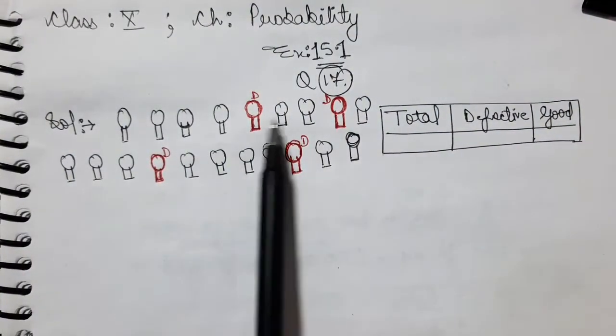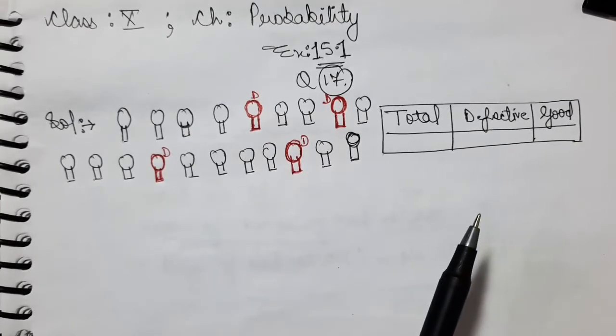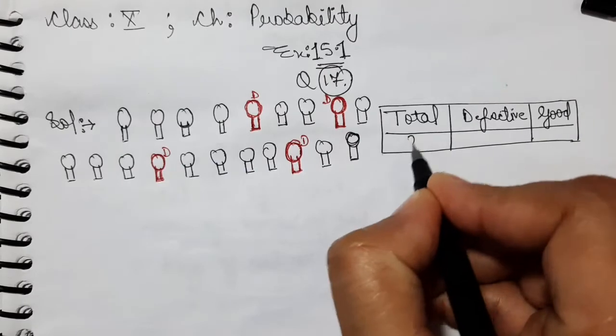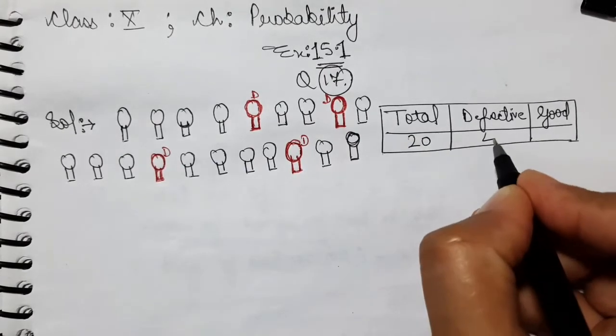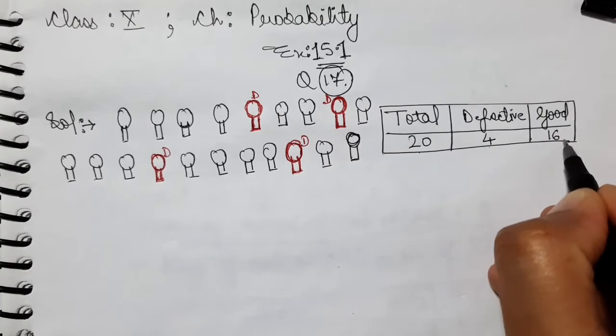Okay, we have total 20 bulbs. These are total 20 bulbs. 4 are defective and the rest of the good ones will be good. That means total is 20 bulbs and 4 are defective. How much is good? 20 minus 4, that is 16.